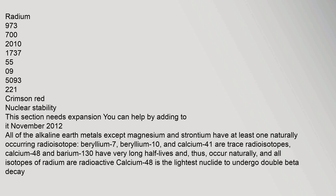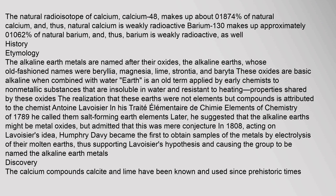All of the alkaline earth metals except magnesium and strontium have at least one naturally occurring radioisotope. Beryllium-7, beryllium-10, and calcium-41 are trace radioisotopes. Calcium-48 and barium-130 have very long half-lives and thus occur naturally, and all isotopes of radium are radioactive. Calcium-48 is the lightest nuclide to undergo double beta decay, making up about 0.1874% of natural calcium, so natural calcium is weakly radioactive. Barium-130 makes up approximately 0.1062% of natural barium, making barium weakly radioactive as well.